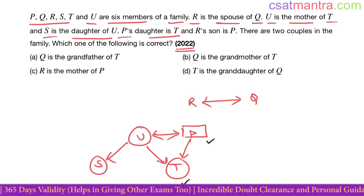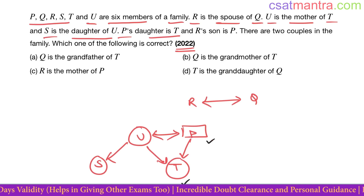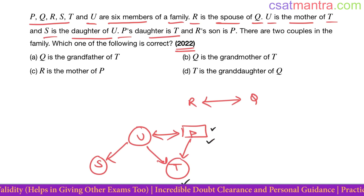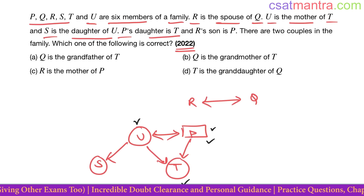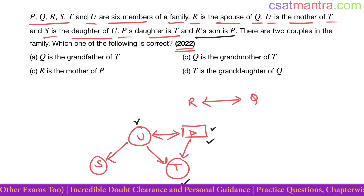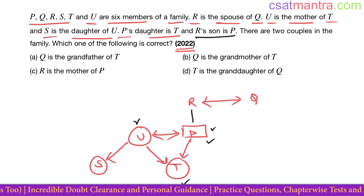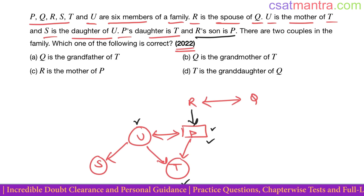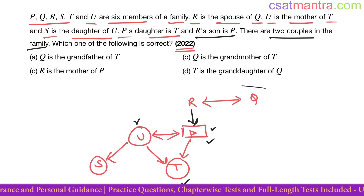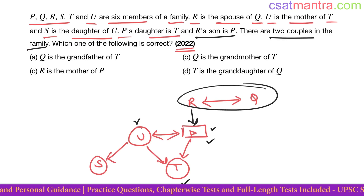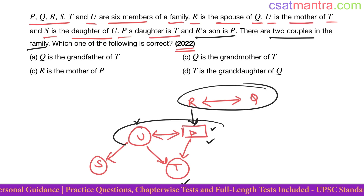R's son is P, so P is male — confirmed. R's gender we do not know yet. There are two couples in the family: this is one couple and this is another couple.